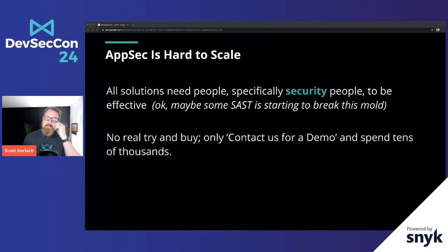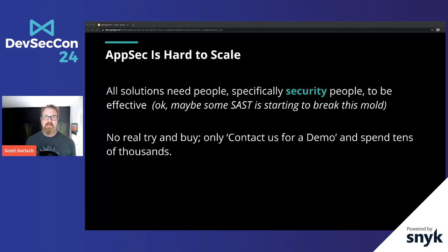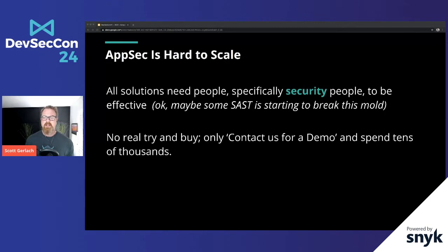AppSec is super hard to scale. Even if you have a great AppSec person building developer relationships and delivering actionable tickets, it's super hard to find more of those people. Once you get past about 20 to 25 engineers, it gets really tough to be involved in all the conversations and test all the software changes. There's also no real try-and-buy for many of these products — they're hidden behind a 'contact us for a demo' paywall that ultimately costs a lot of money.